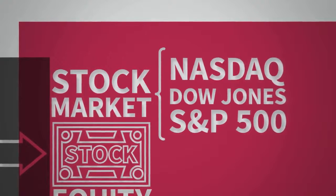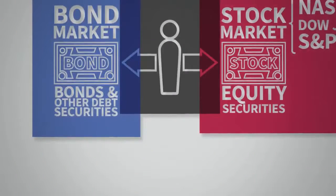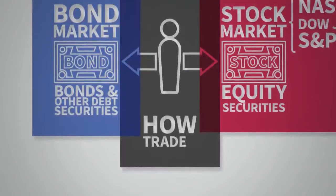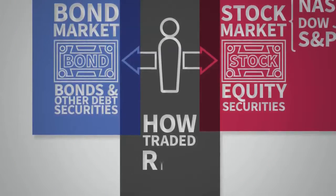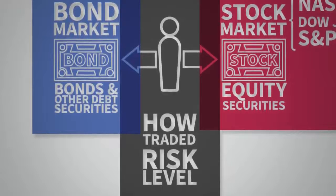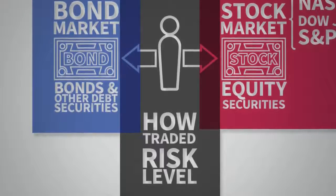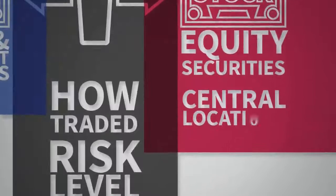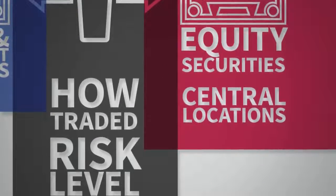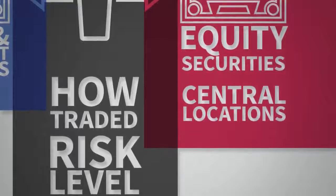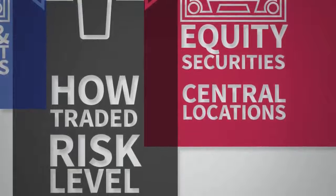The differences between the two markets involve how much product is traded and the risks they present. The stock market has central locations, such as the New York Stock Exchange, where stocks are bought and sold.